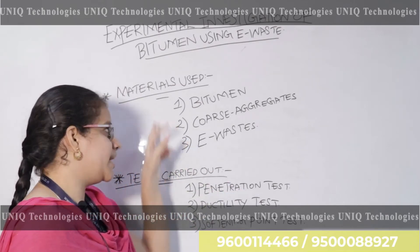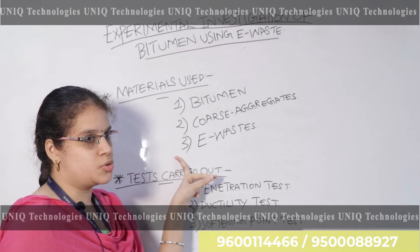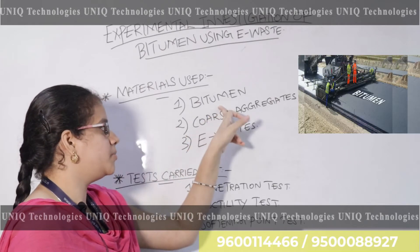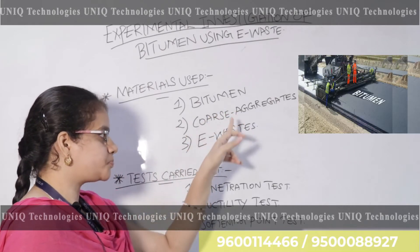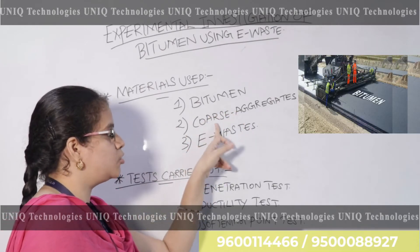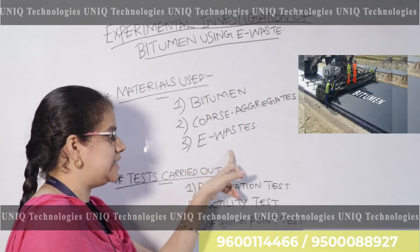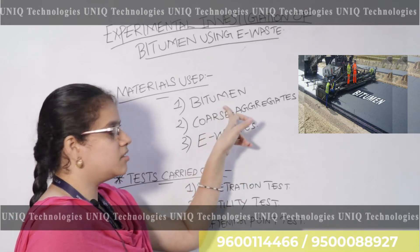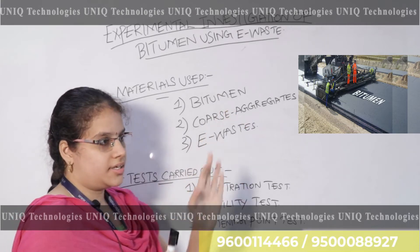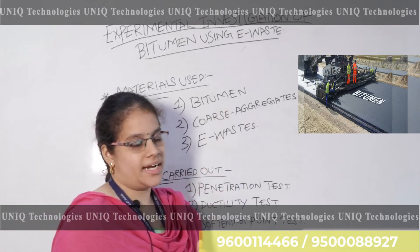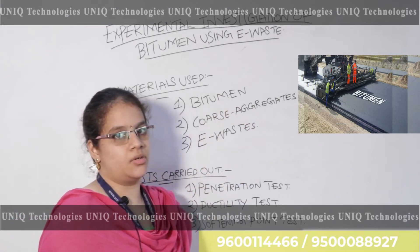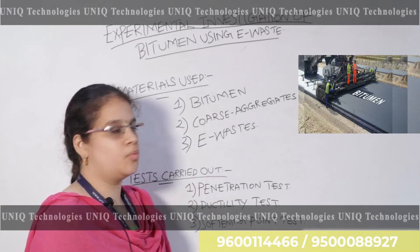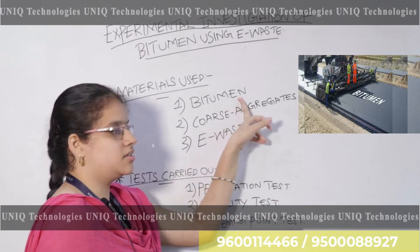Next, we will see how many materials we use. First of all, bitumen is used, then coarse aggregate, and then e-waste. There are many grades available, and if we have any grade we can add that.